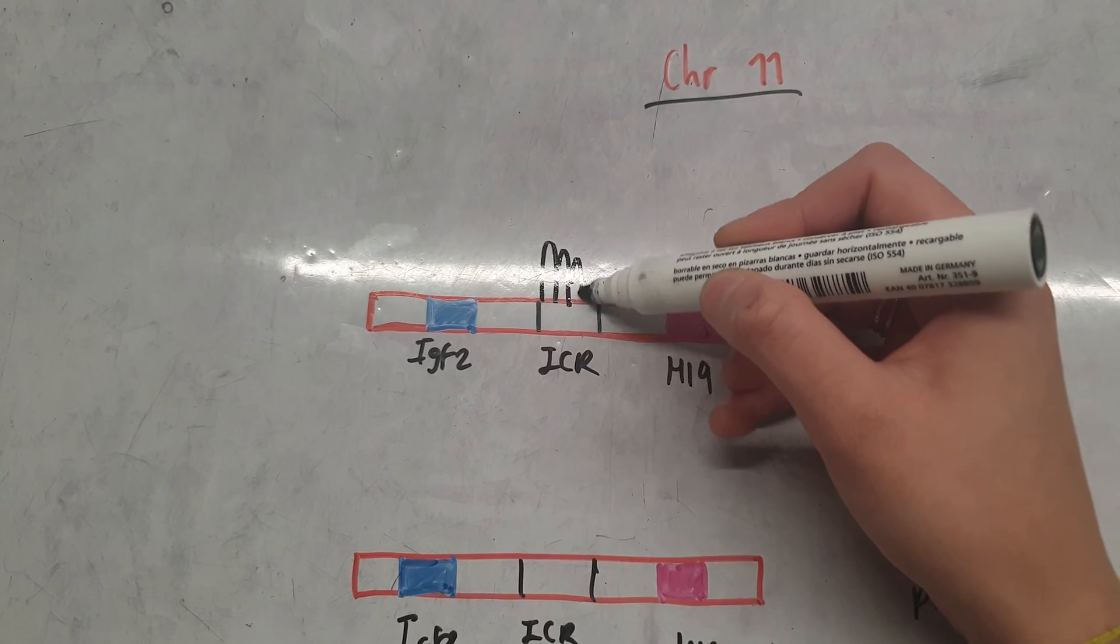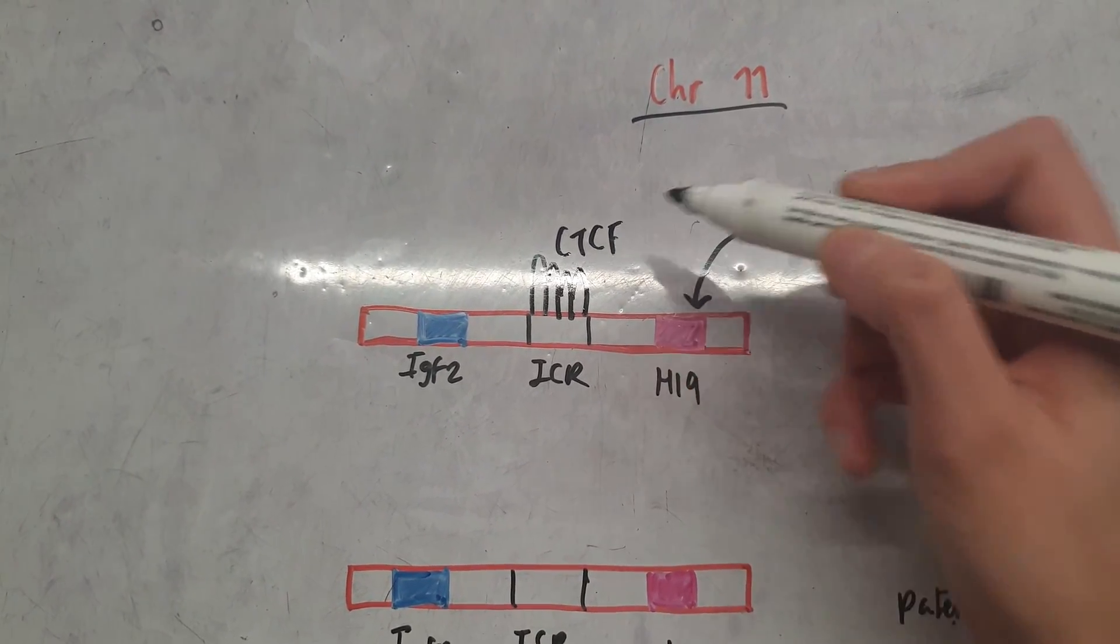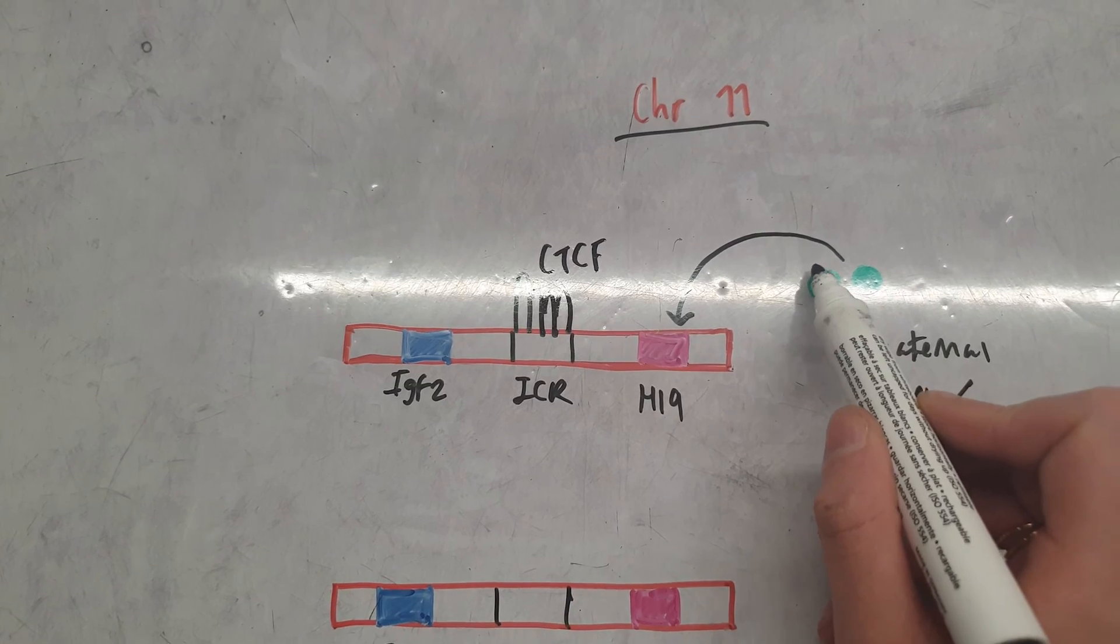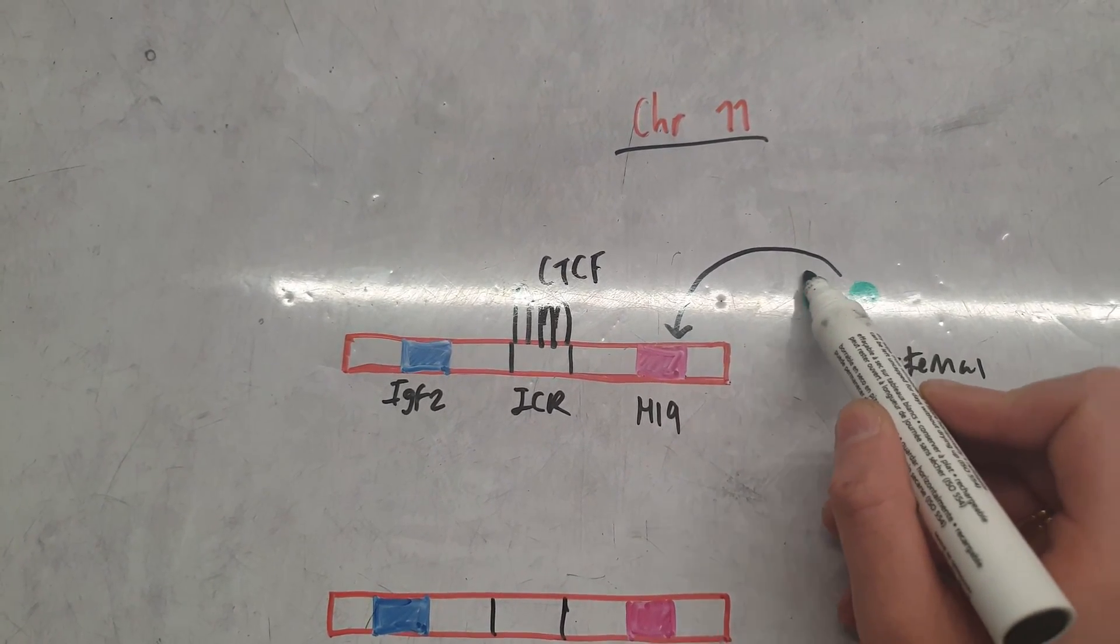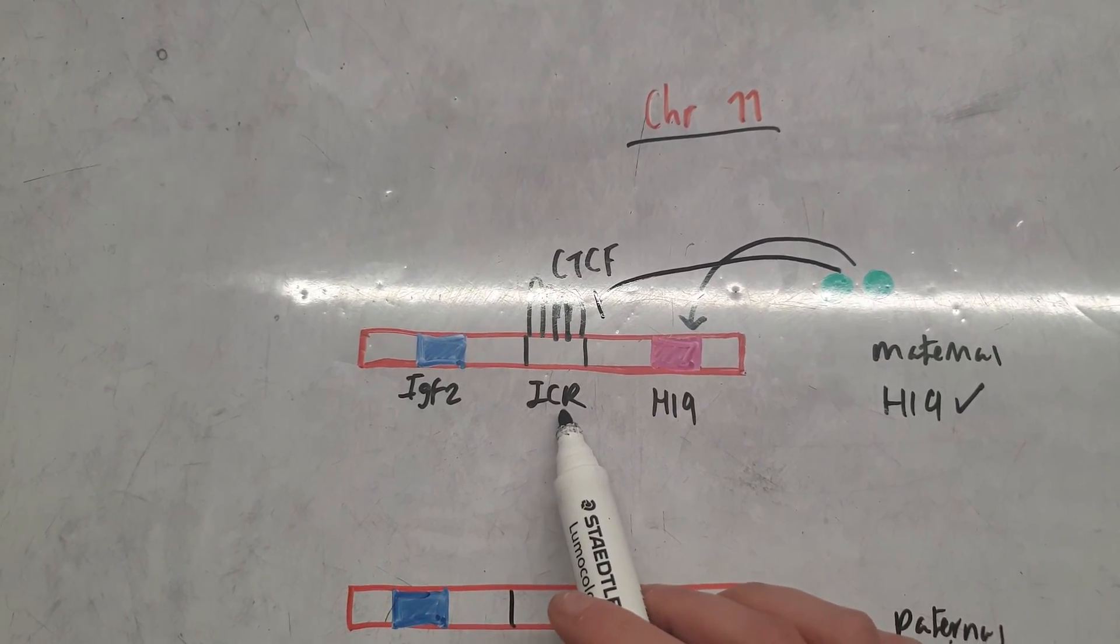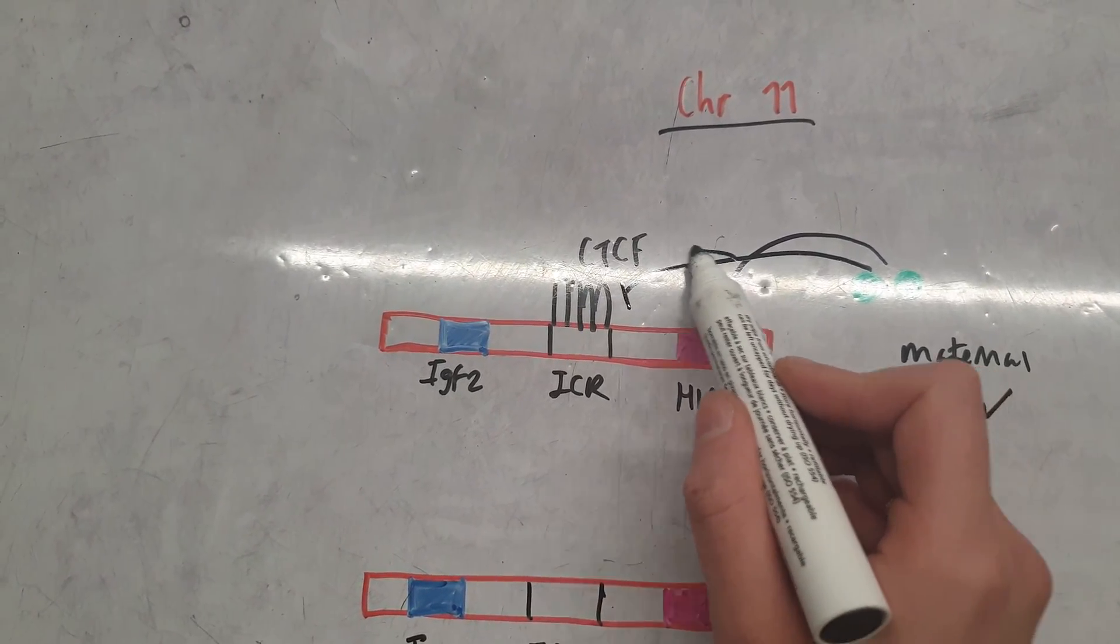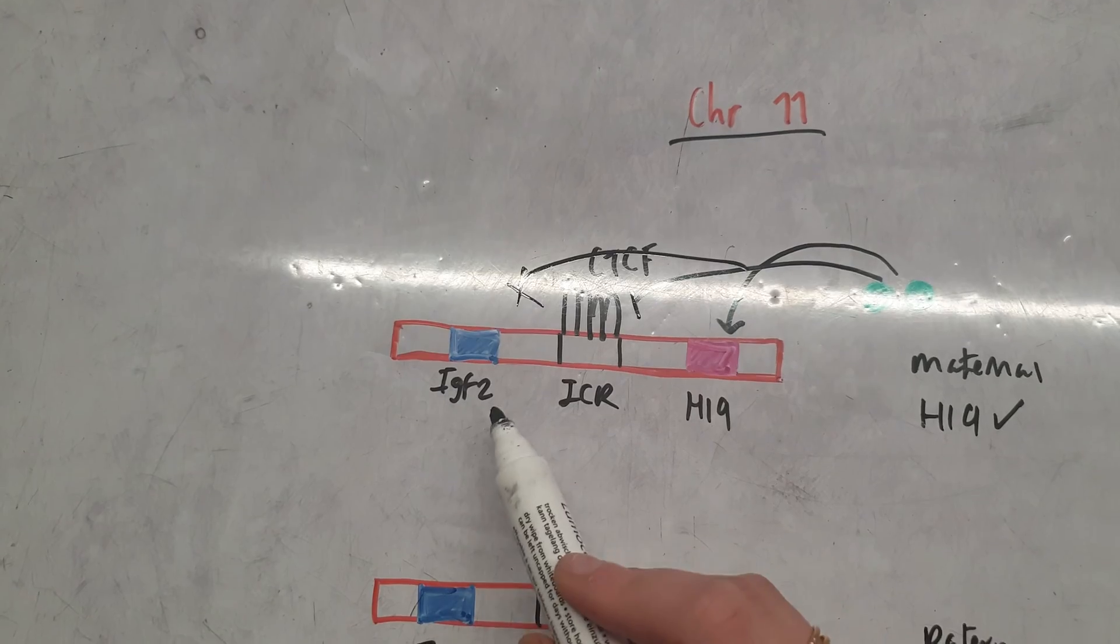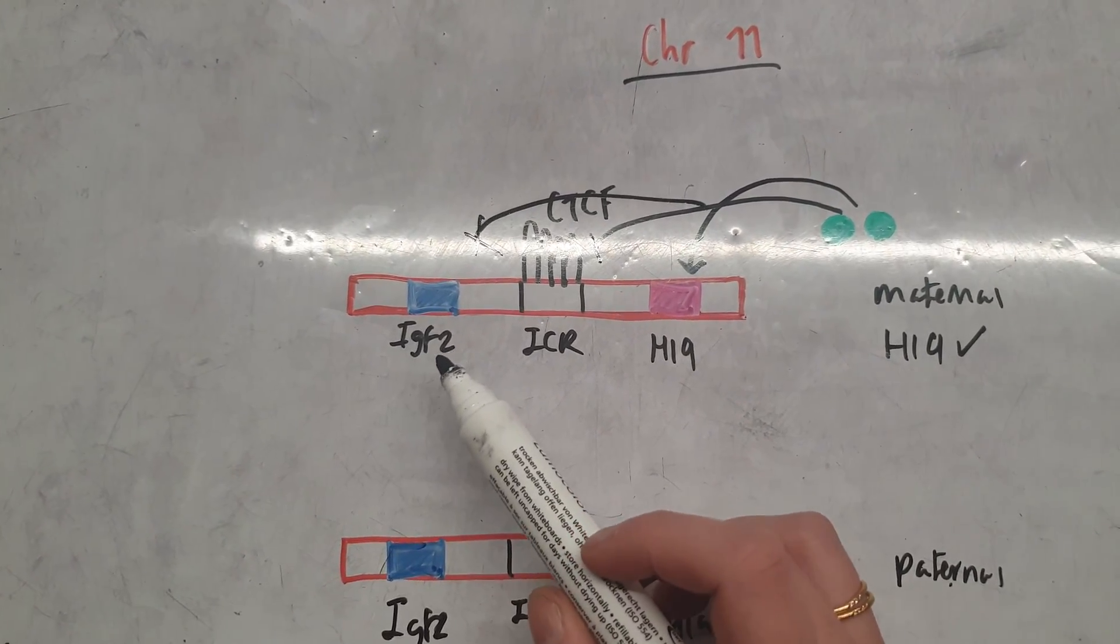This basically prevents these enhancer transcription factors from being able to move beyond the imprinting control region, so they can't actually bind to IGF2 on the maternal chromosome.